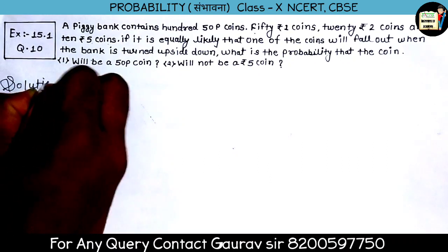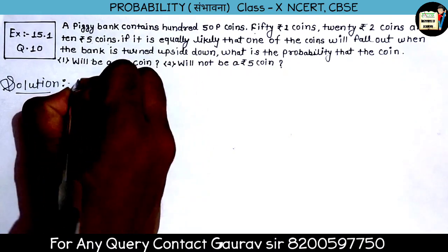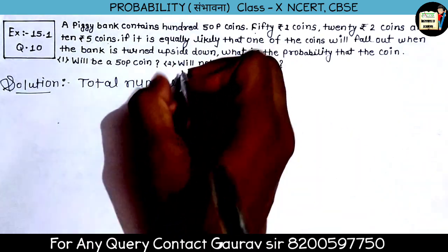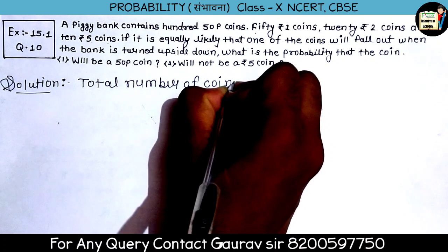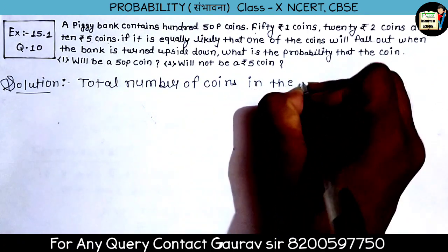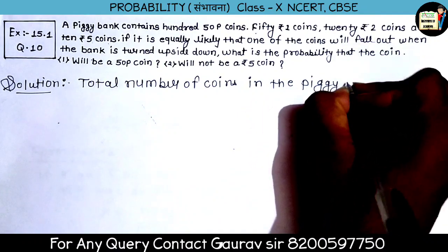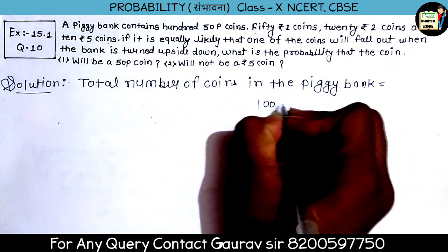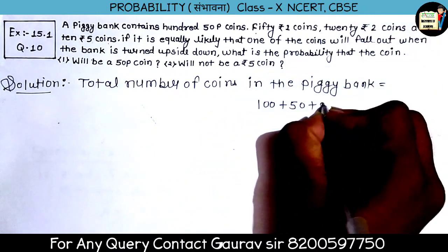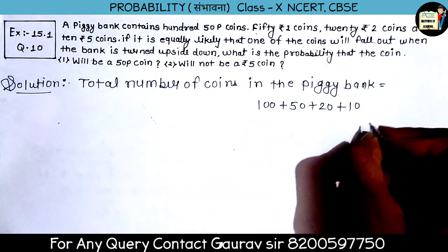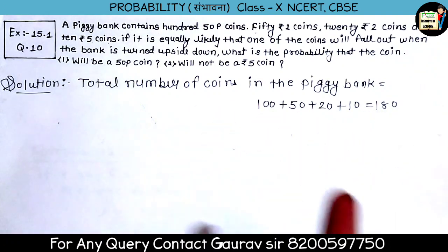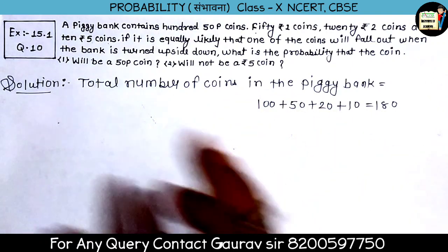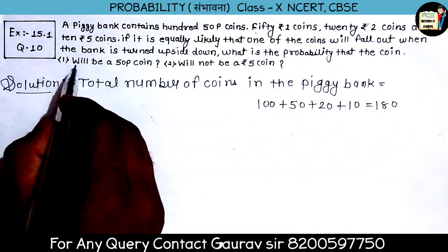Let's start. Total number of coins in the piggy bank: 100 (50p) plus 50 (₹1) plus 20 (₹2) plus 10 (₹5) — total coins = 180. This is our total probability. Now, the first probability asked is: it will be a 50-paise coin. 50-paise coins are 100. Note that the numbers are given in words in the question, so pay attention.